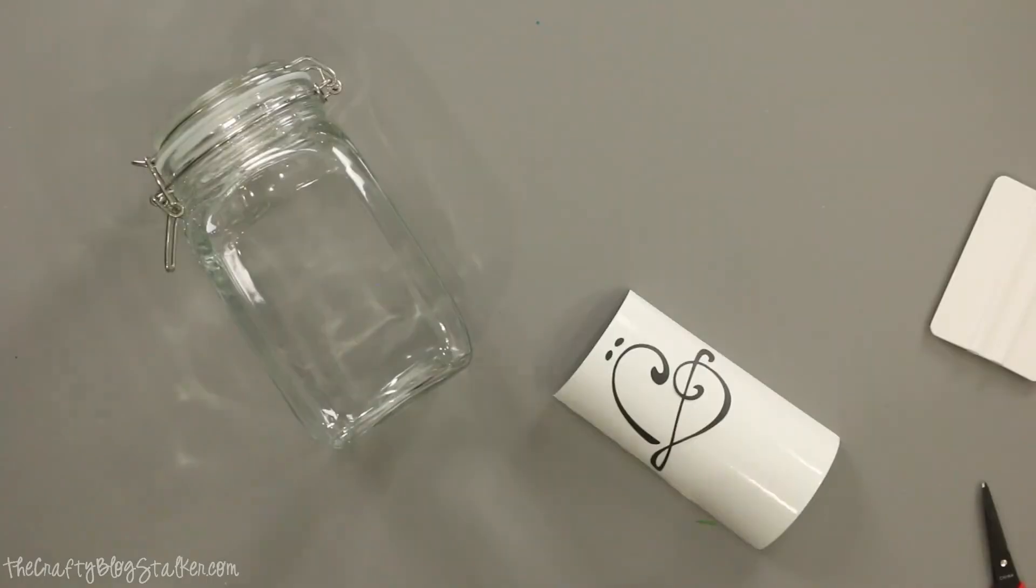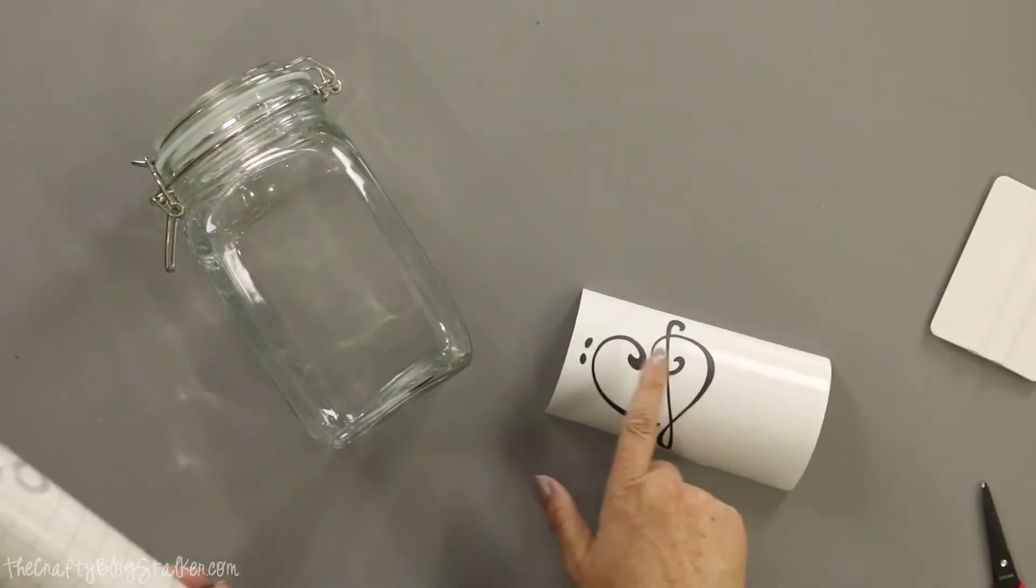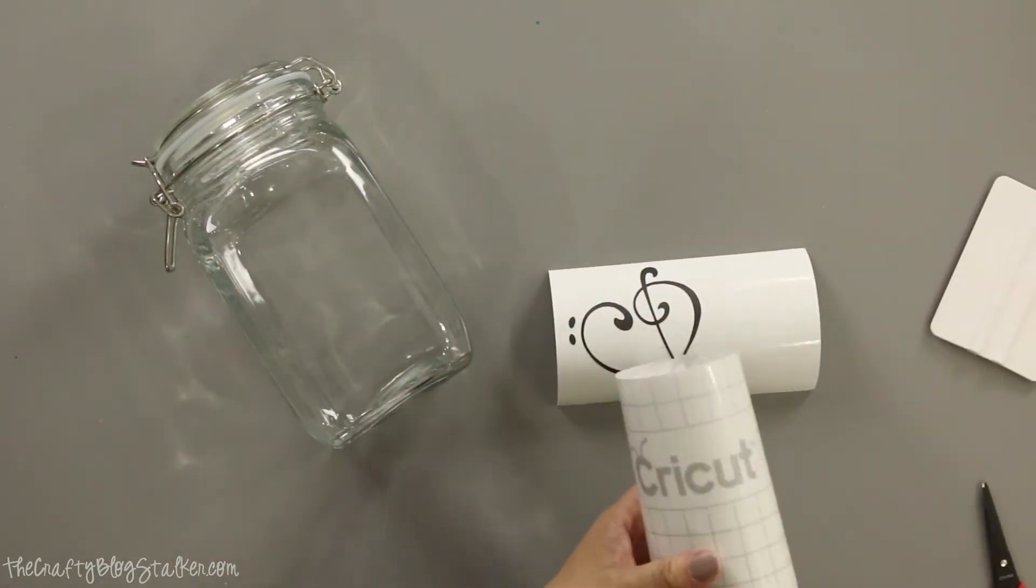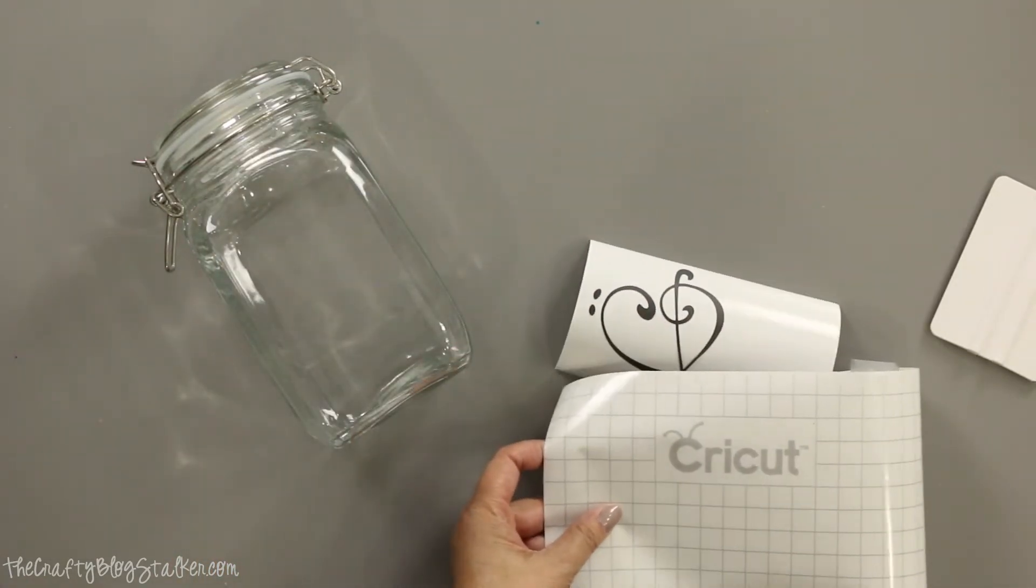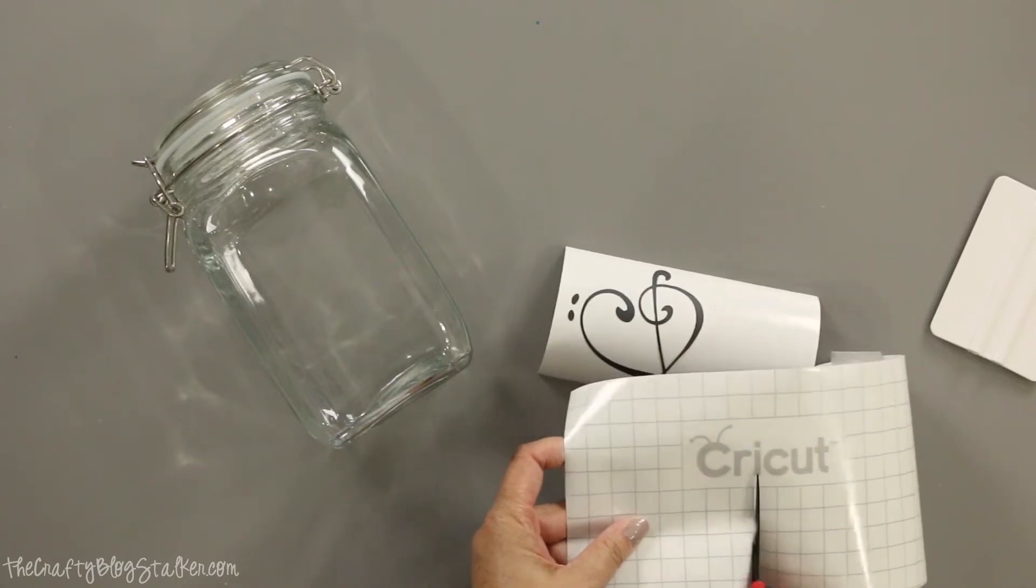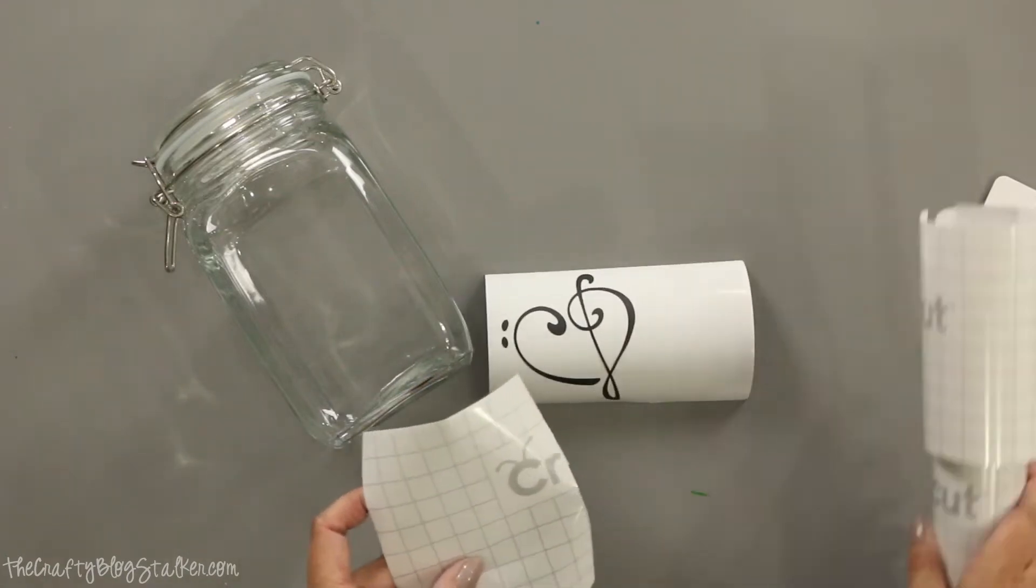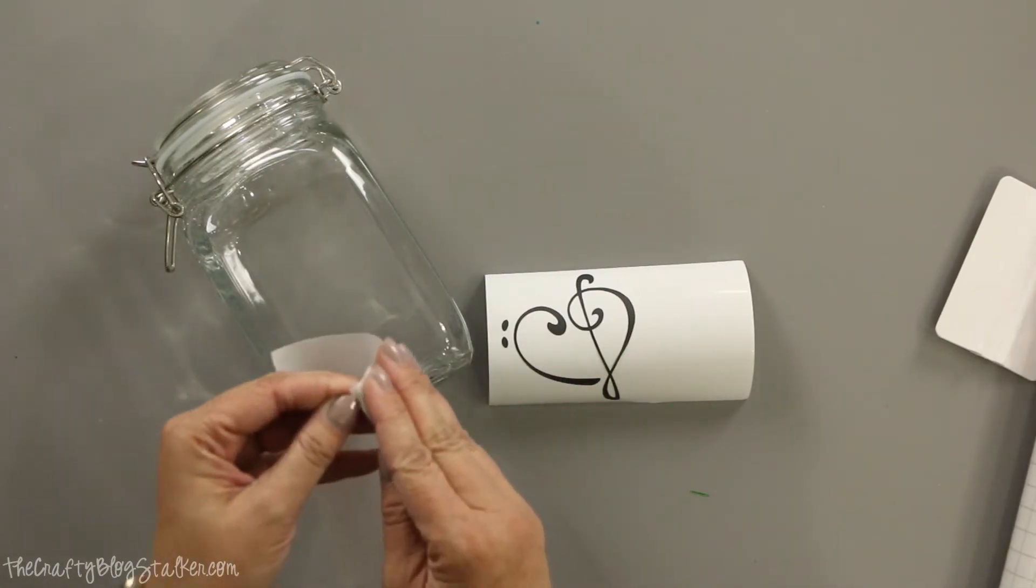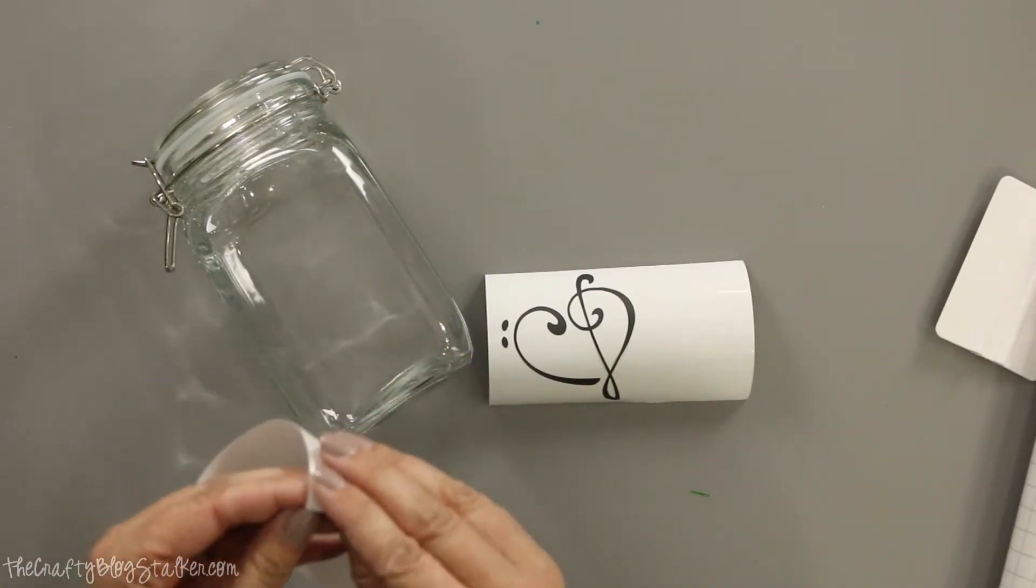So I need my transfer tape. This time I am going to use transfer tape, and transfer tape just makes it so you can move everything over without anything losing its shape. Cricut has amazing transfer tape. It's probably my favorite. Beverly, that is not a Cricut file.